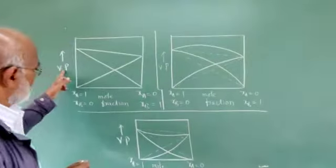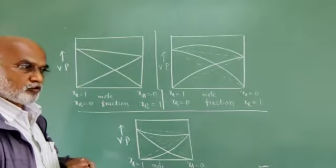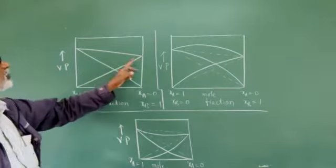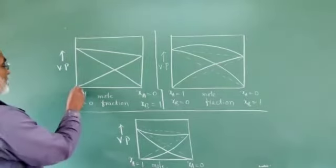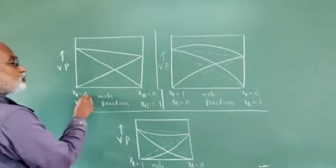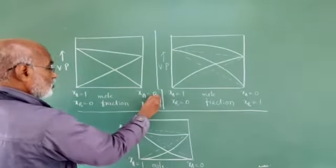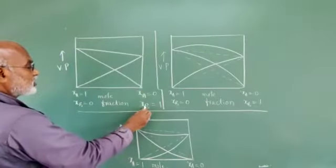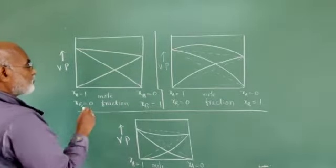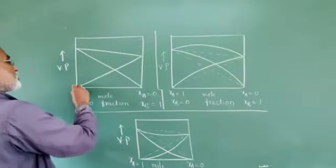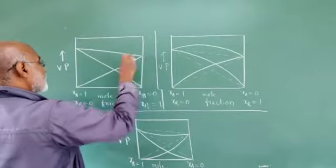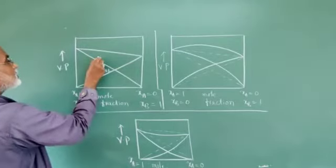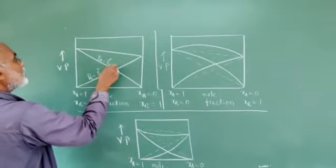Let me plot a graph of vapor pressure versus mole fraction for an ideal solution. The graph becomes a straight line. At this point, the mole fraction of A is equal to one — it is pure component A. At the other end, component B is zero, and as we move in this direction, component B increases. This curve represents P_B = P°_B × x_B, and this curve represents P_A = P°_A × x_A.